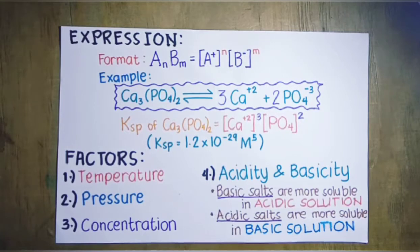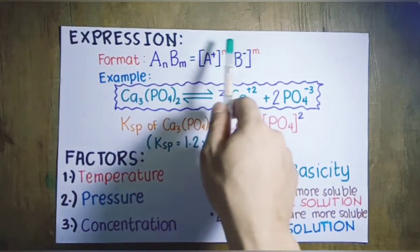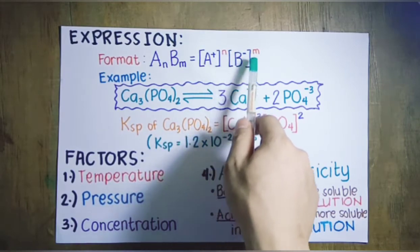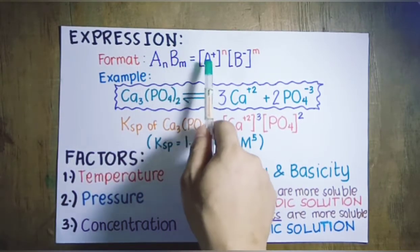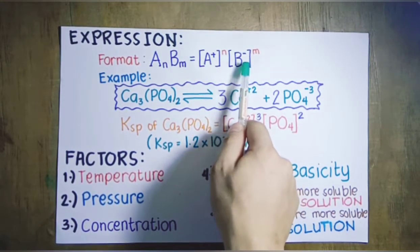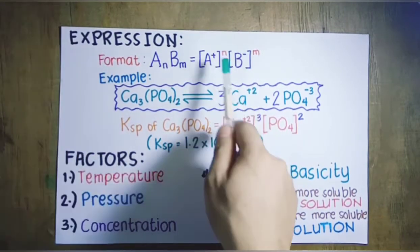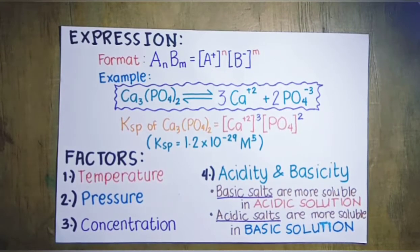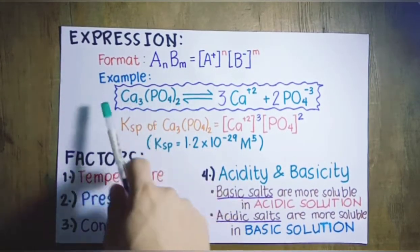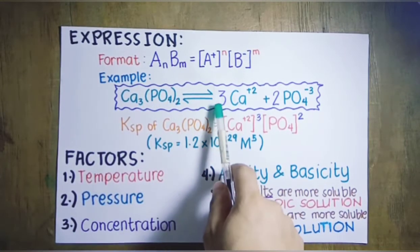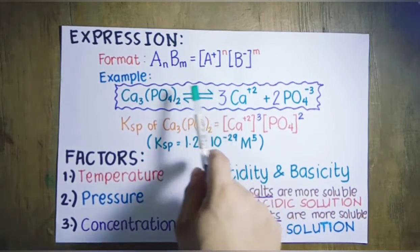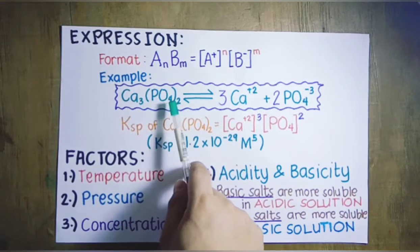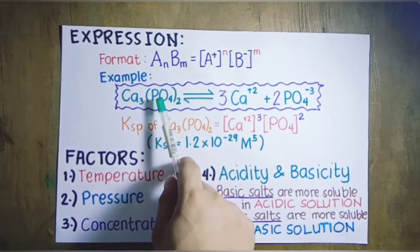How do we express the formula for the solubility product constant? The formula follows the format: for a compound A_N B_M, Ksp equals the molar concentration of the cation raised to N, multiplied by the molar concentration of the anion raised to M, where A is the cation, B is the anion, and N and M represent the stoichiometric coefficients of those ions. For example, when calcium phosphate is dissolved in water, it dissociates into three particles of calcium ion and two particles of phosphate ion — the three came from the subscript of calcium and the two from the subscript of phosphate in the formula.